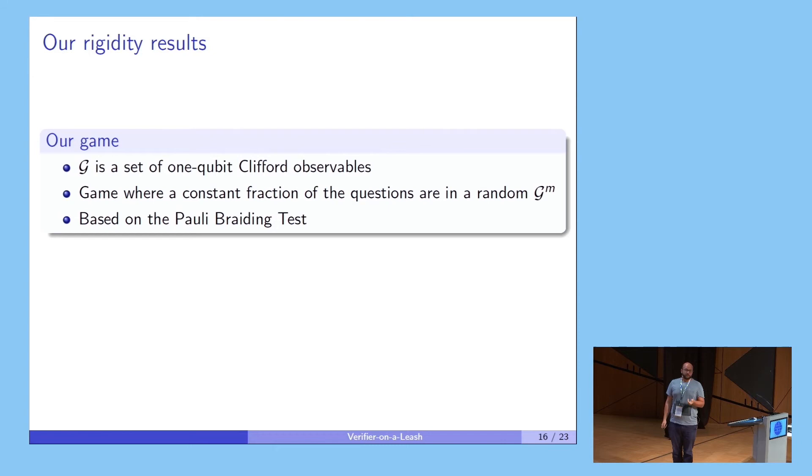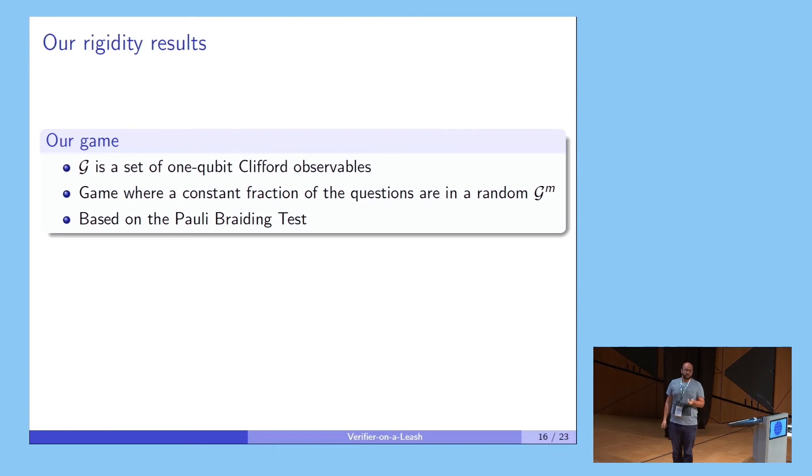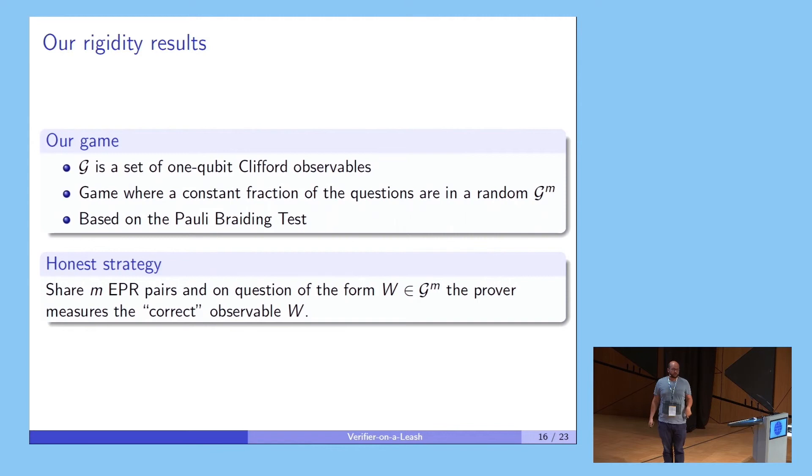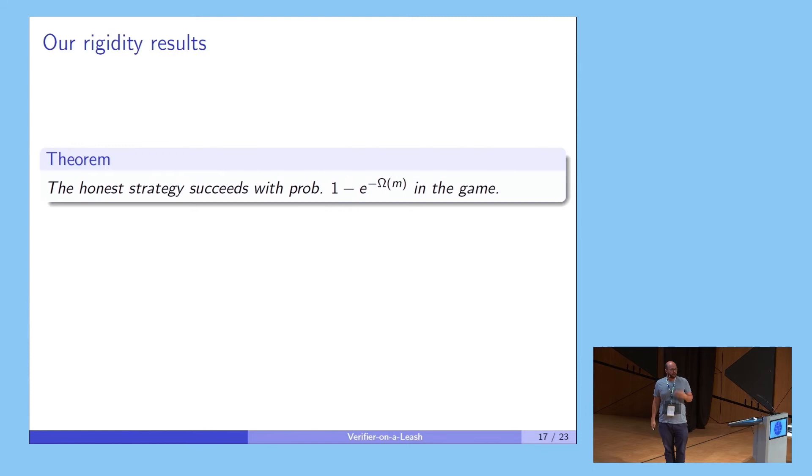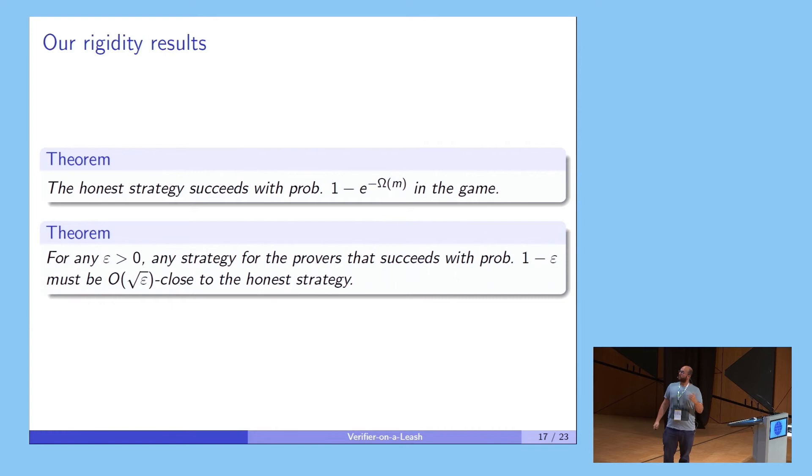Technically, what we need to do then is to have a non-local game that allows us to do the same type of arguments for one qubit Clifford observables. Remember, these are the observables that the quantum verifier was doing in Broadbent's protocol. Such a game would help us test PV in our new protocol. In this non-local game, the provers should share M EPR pairs and just perform the correct measurement on them. Then we're able to show that this honest strategy passes with probability exponentially close to one. And most important, we have the rigidity theorem that shows that any strategy that passes with probability 1 minus epsilon is square root of epsilon close to the optimal one, to the honest one.